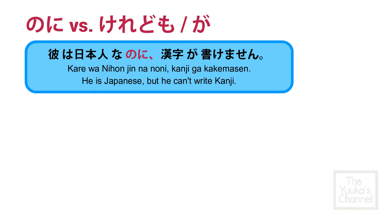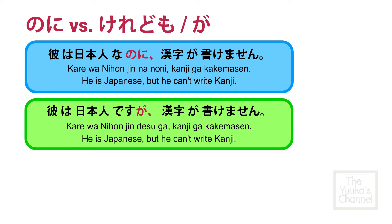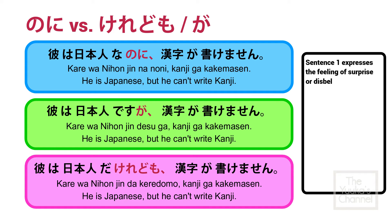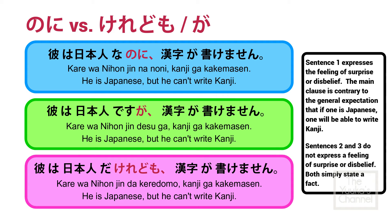Kare wa nihonjin nano ni kanji ga kakemasen — He is Japanese but he can't write kanji. Kare wa nihonjin desu ga kanji ga kakemasen — He is Japanese but he can't write kanji. Kare wa nihonjin da keredomo kanji ga kakemasen — He is Japanese but he can't write kanji. Sentence 1 expresses the feeling of surprise or disbelief — the main clause is contrary to the general expectation that a Japanese person will be able to write kanji. Sentences 2 and 3 do not express a feeling of surprise or disbelief; both simply state a fact.